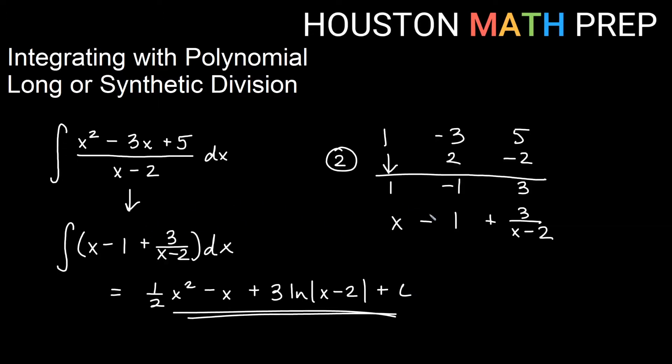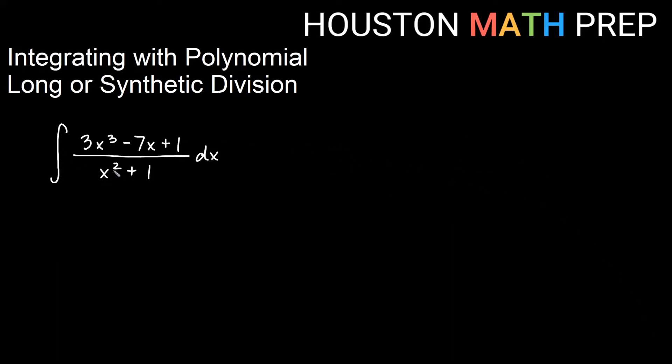The last one we did long division, this one we did synthetic division. You can decide when you have a linear factor. Remember, you can use synthetic division. If you have something like our last one here, which has a quadratic on the bottom, then synthetic division is not really an option. So we have 3x cubed minus 7x plus 1 over x squared plus 1.